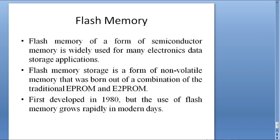That means flash memory came from the combination of EPROM — electronically programmable read-only memory — and EEPROM — electronically erasable programmable read-only memory. By combining these two traditional memory types, flash memory was developed. Flash memory was first developed in the 1980s. It is an old technology, but the use of flash memory has grown rapidly in modern days and has many uses in modern computer systems.